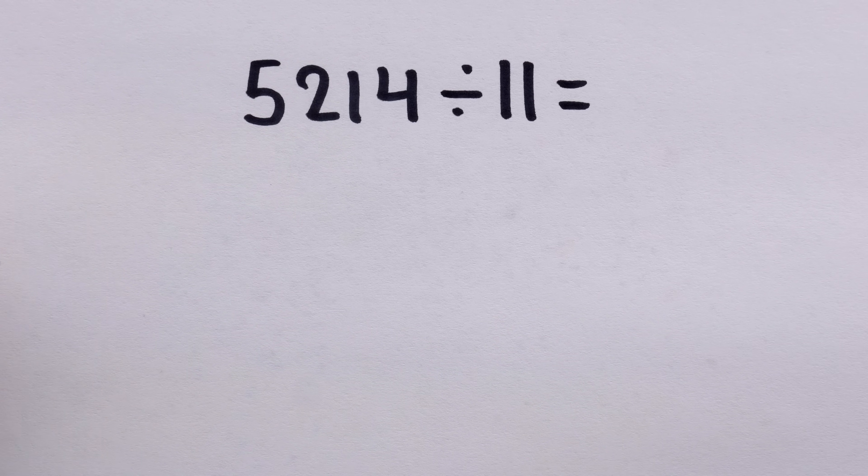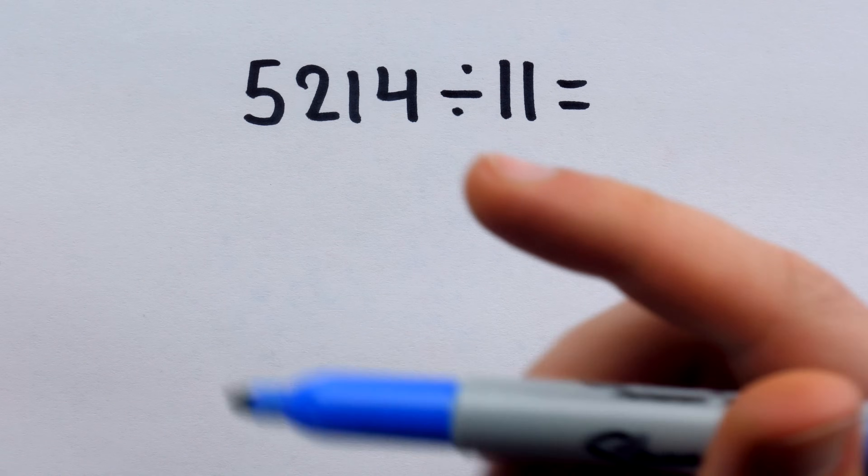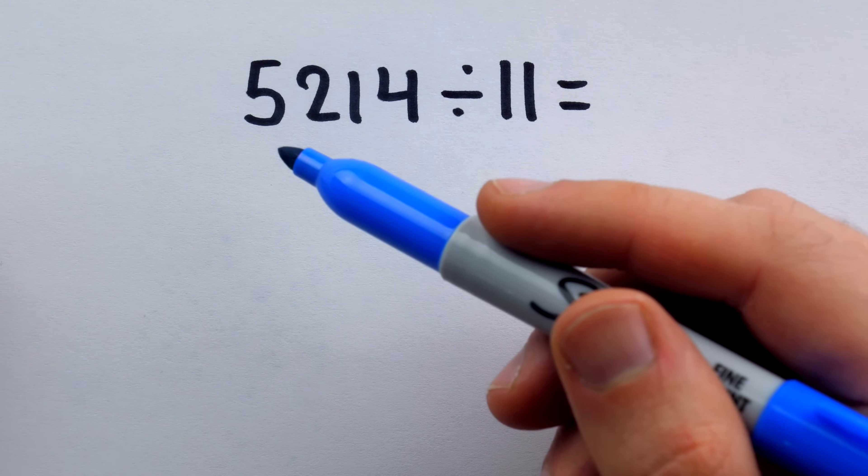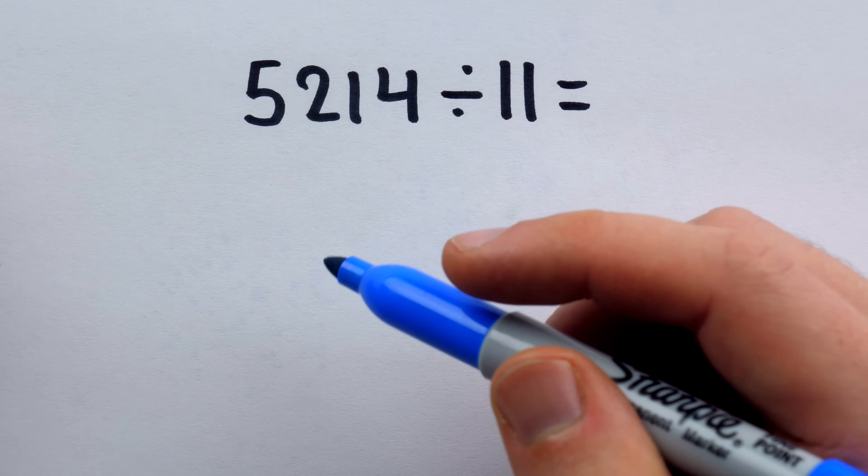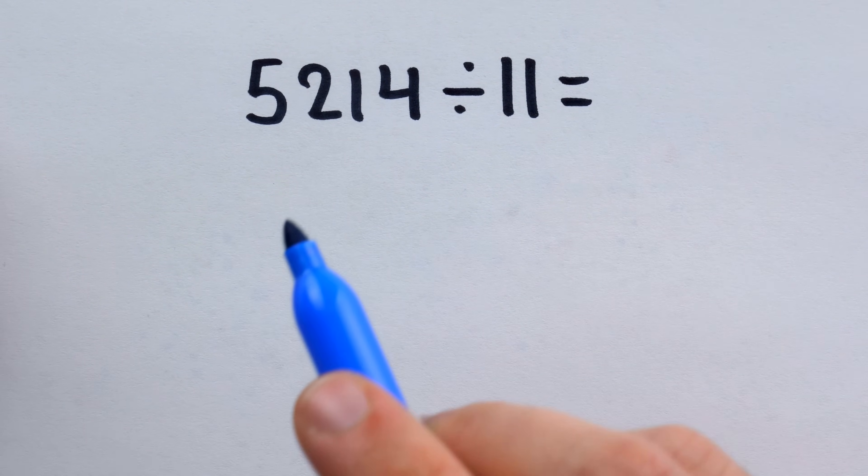The rule for divisibility by 11 is interesting because it's quite a bit different from the other divisibility rules. To know if something's divisible by 5, you just need to know if it ends in 5 or 0, and for divisibility by 3, you just add up the digits. Here's the test for 11.